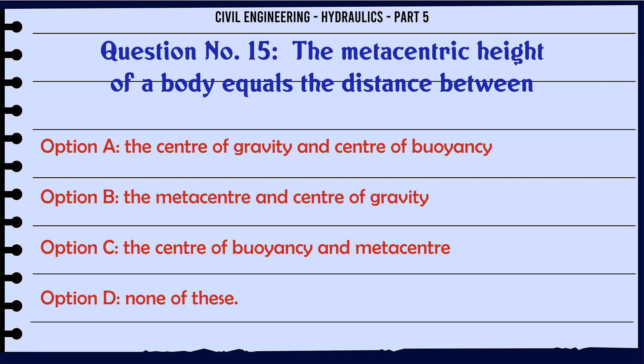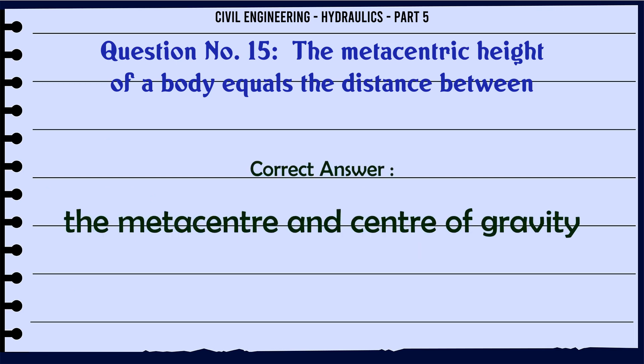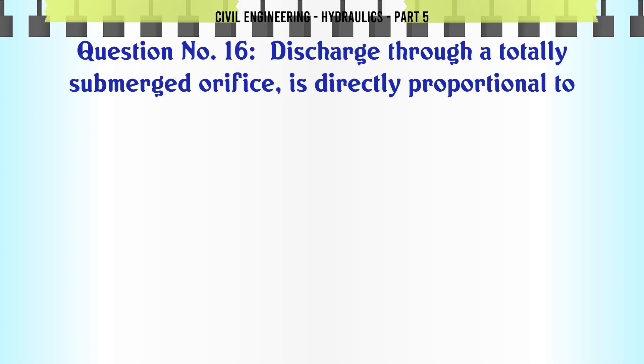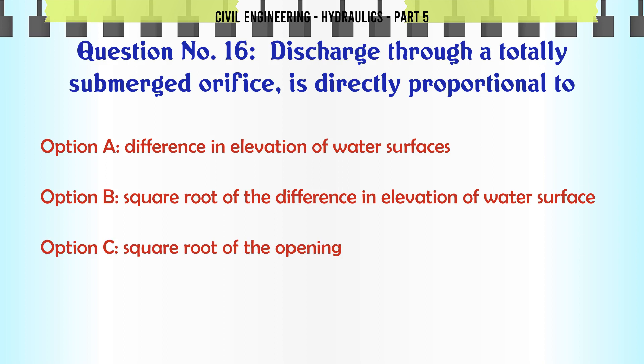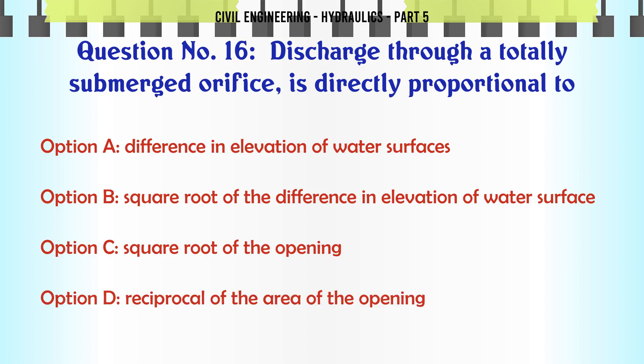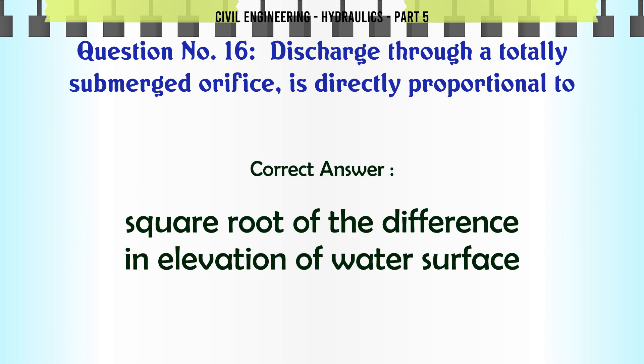Discharge through a totally submerged orifice is directly proportional to: A. difference in elevation of water surfaces, B. square root of the difference in elevation of water surface, C. square root of the opening, D. reciprocal of the area of the opening. The correct answer is square root of the difference in elevation of water surface.